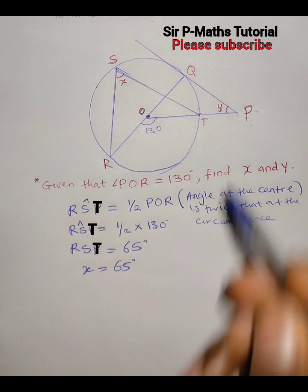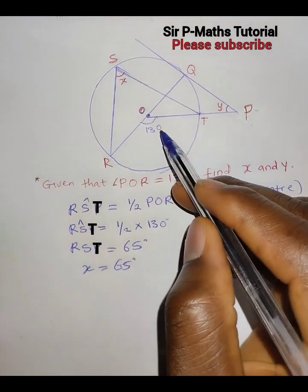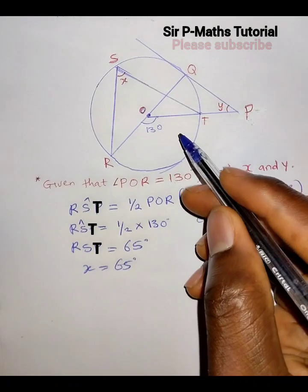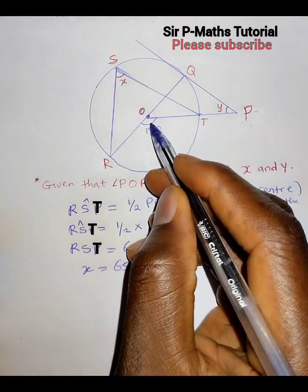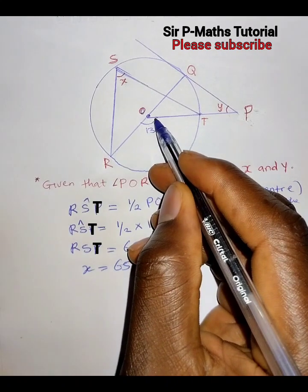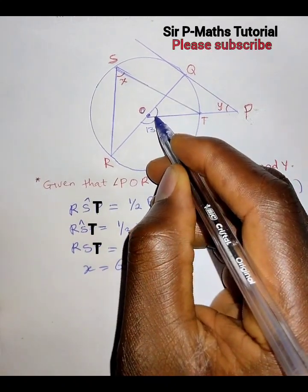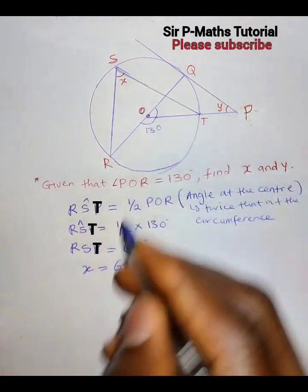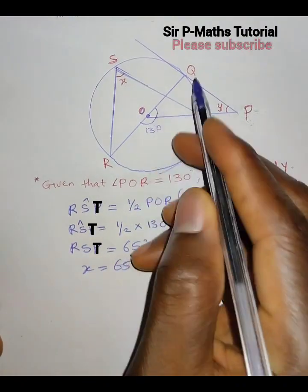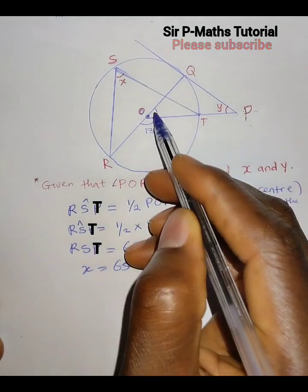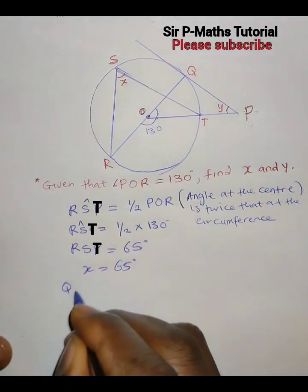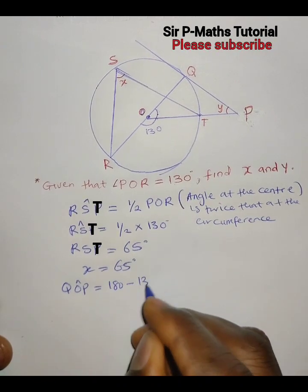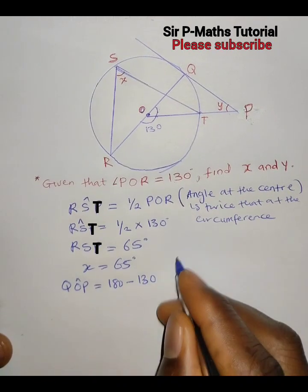Now let's find Y. We'll look for the linking angles that will help us using circle theorems. Consider the angle at the center: since BOR is 130 degrees, I can get angle QOP to complete the straight line. So QOP equals 180 minus 130.